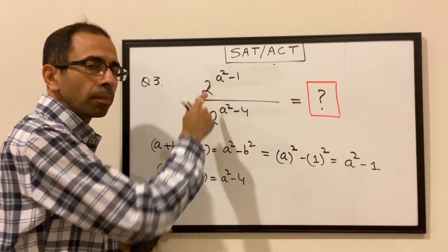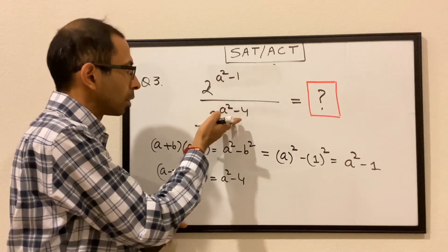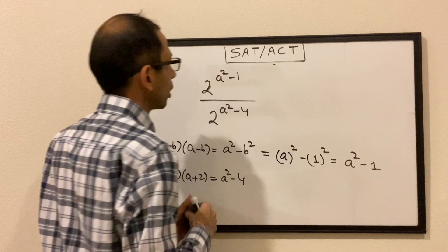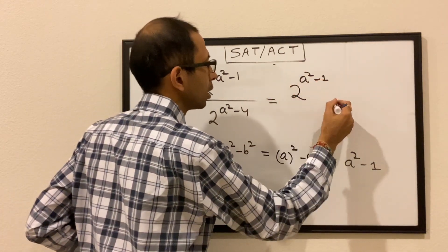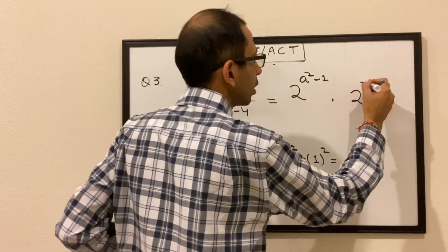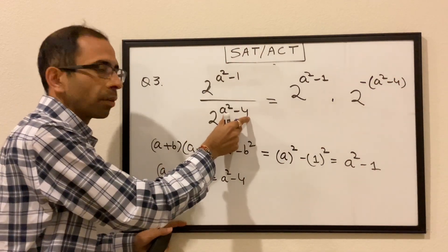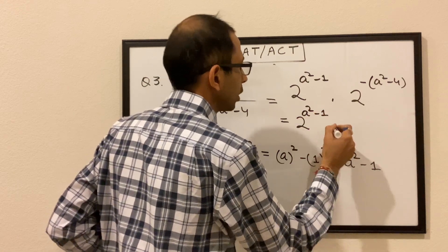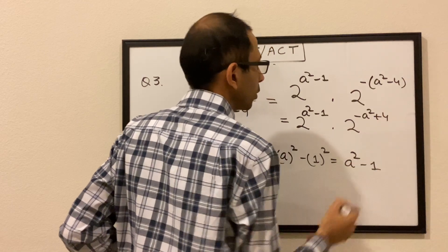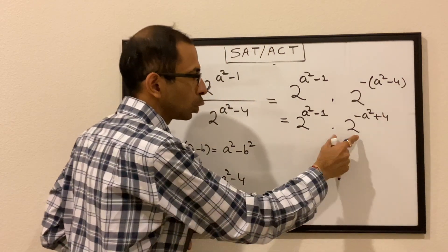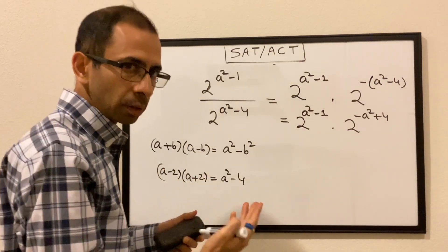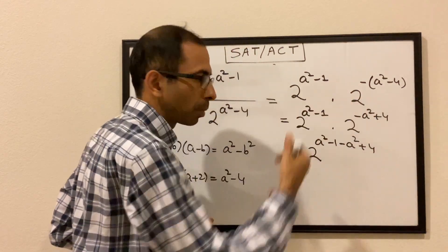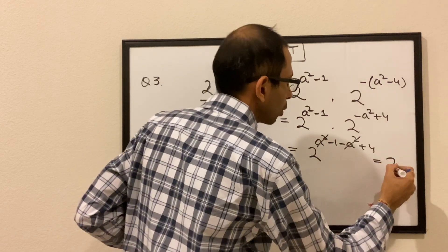The base is the same for both terms. When dividing two terms with the same base, we take the reciprocal — changing the sign of the exponent. So the expression becomes 2^(a²−1) times 2^(−(a²−4)), which equals 2^(a²−1) times 2^(−a²+4). Since the bases are the same, we add the powers: a² minus 1 minus a² plus 4. The a² terms cancel, leaving 2^(−1+4) equals 2³ equals 8.